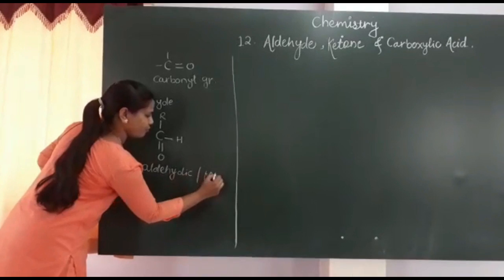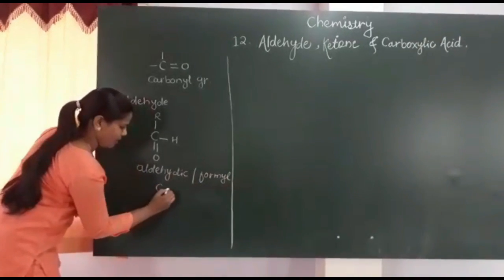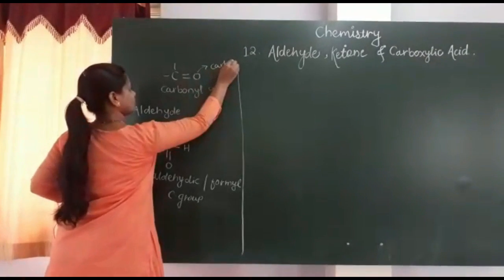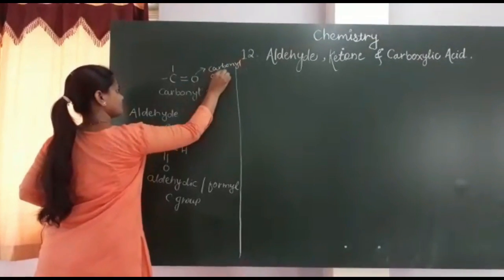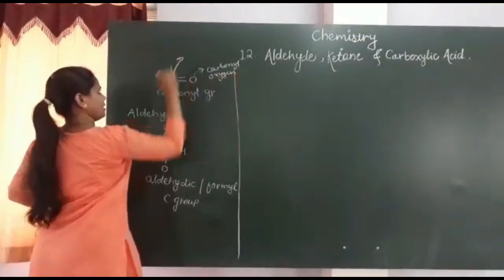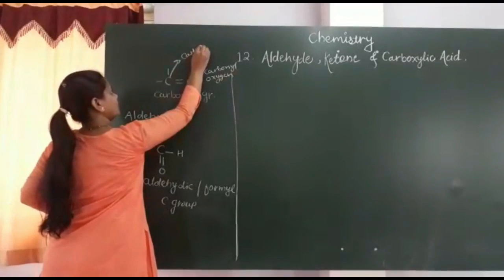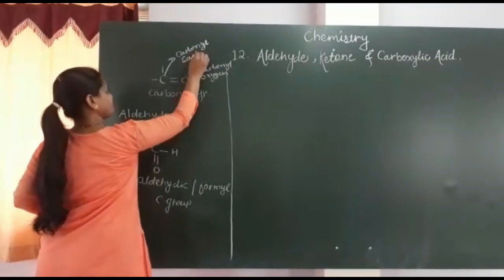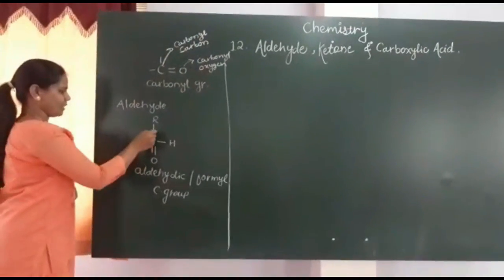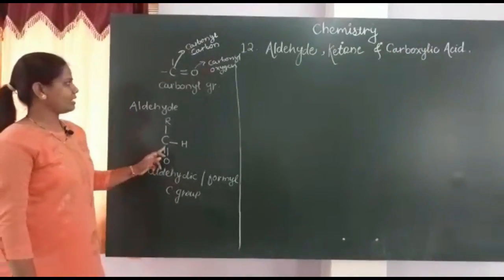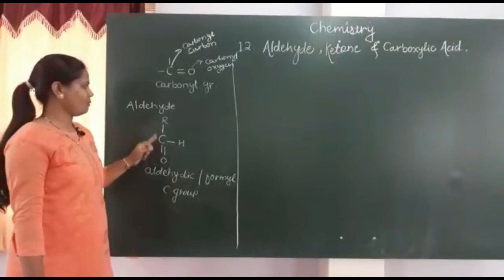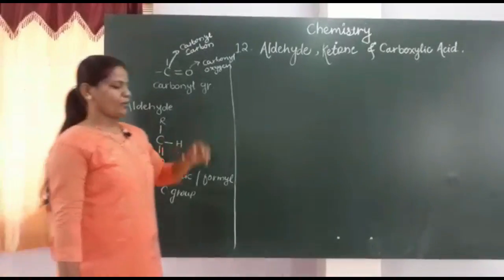The oxygen here is called the carbonyl oxygen, and the carbon is called the carbonyl carbon. So when carbon and oxygen are bonded with a double bond, it is called the carbonyl group. Now you have seen the arrangement of the carbonyl group in the aldehyde. Let us now see how it is in the ketone.